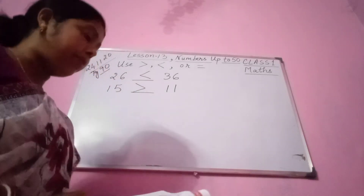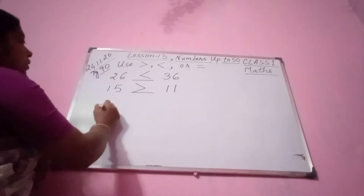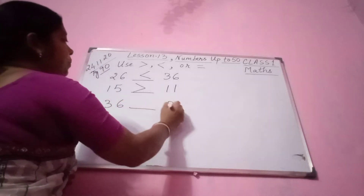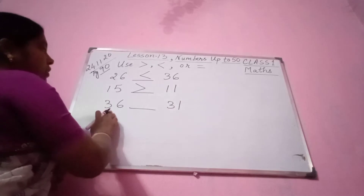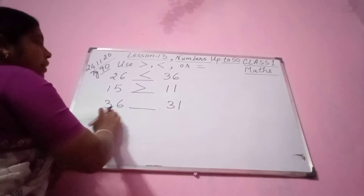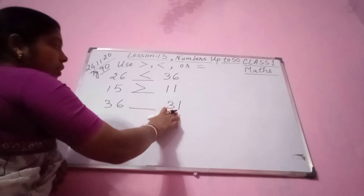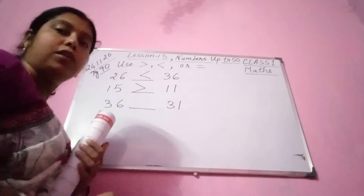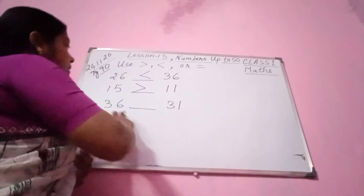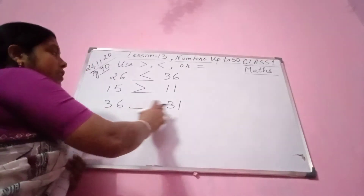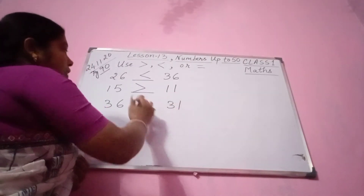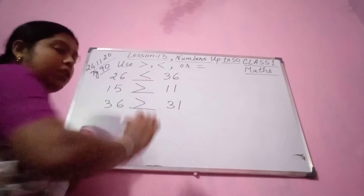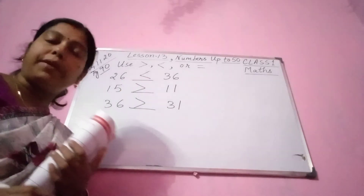Next number — 36 and 31. Please compare here: is 36 bigger or is 31 bigger? So 36 is bigger. 3 tens and 6 ones is 36; 3 tens and 1 one is 31. So 36 is bigger — put the bigger sign.